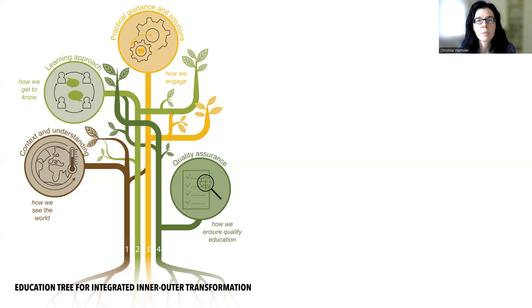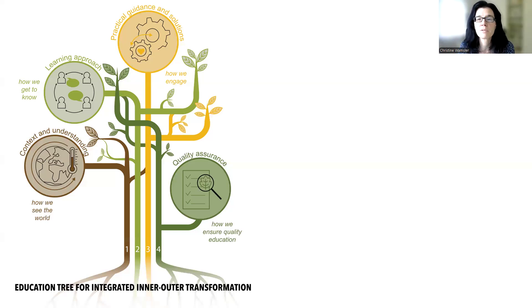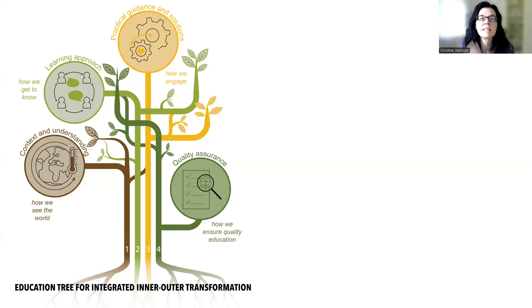You could say that the roots represent our inner world. And the parts that can be seen — the trunk, the branches, and the leaves — they represent the outer world. However, for the tree to exist, both worlds must exist simultaneously and need to be given equal attention.